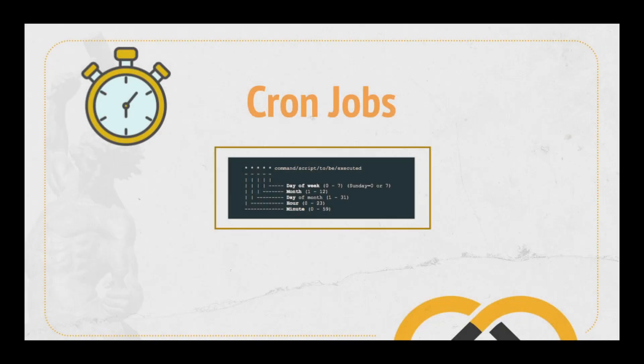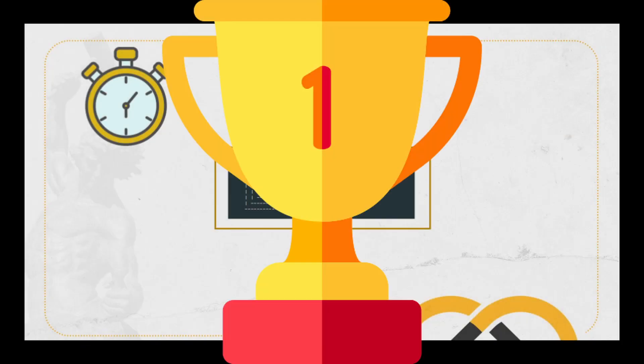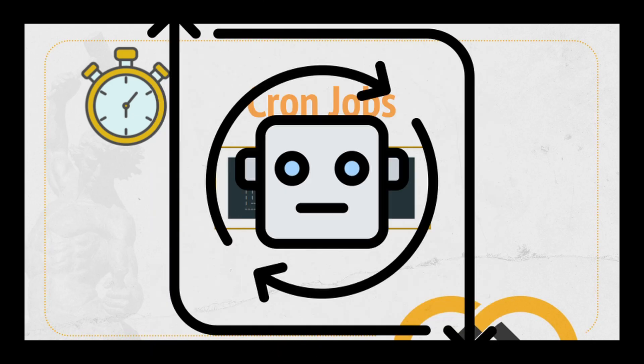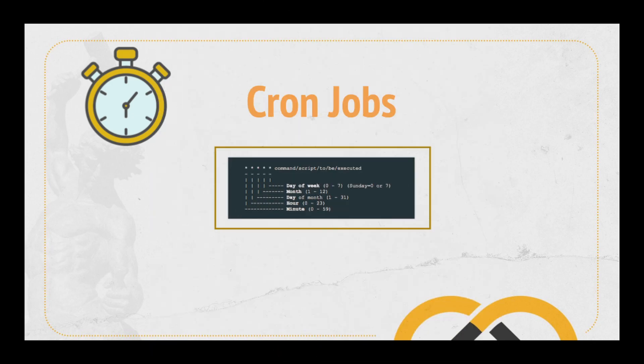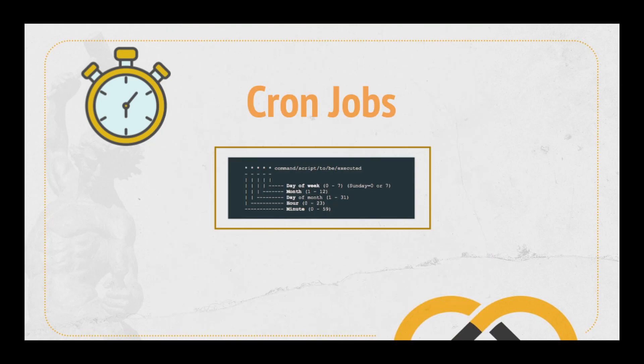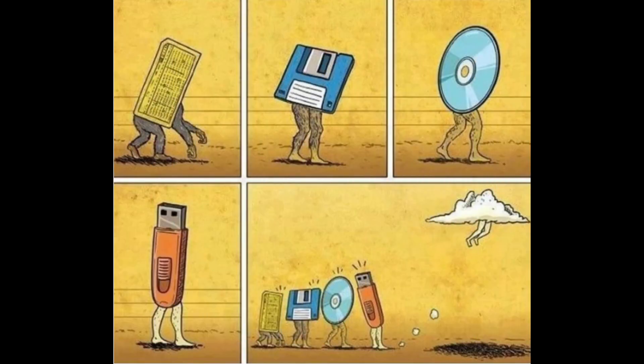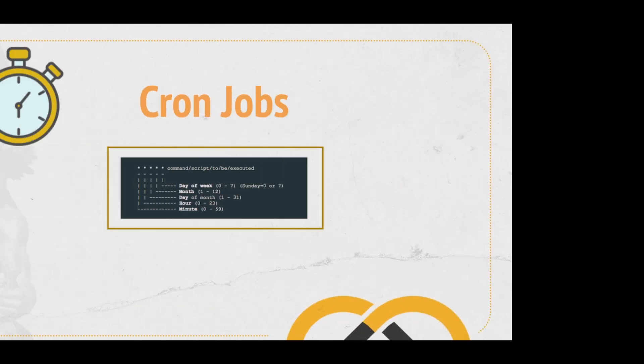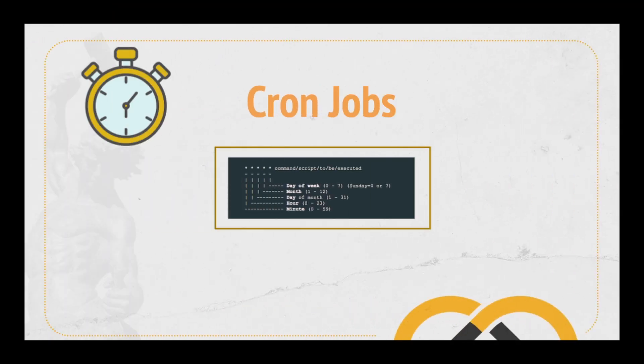Cron expressions are one of the most common ways — maybe the most common way — to run services, jobs, and scripts in a periodic manner or by some specific date. By leveraging this capability to the cloud, it can allow us to create really powerful services and applications.